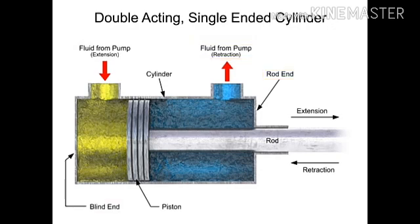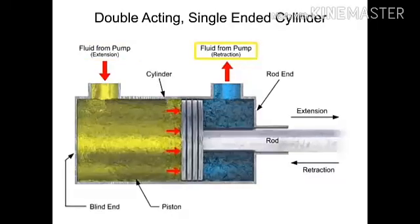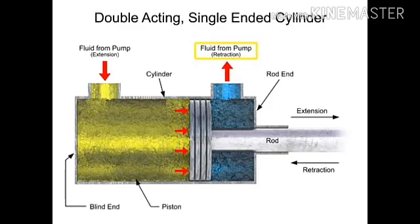A directional control valve sends fluid through the blind end port while venting fluid out the rod end port back to the tank. Pressure builds up and generates a force on the piston, causing the extension stroke.